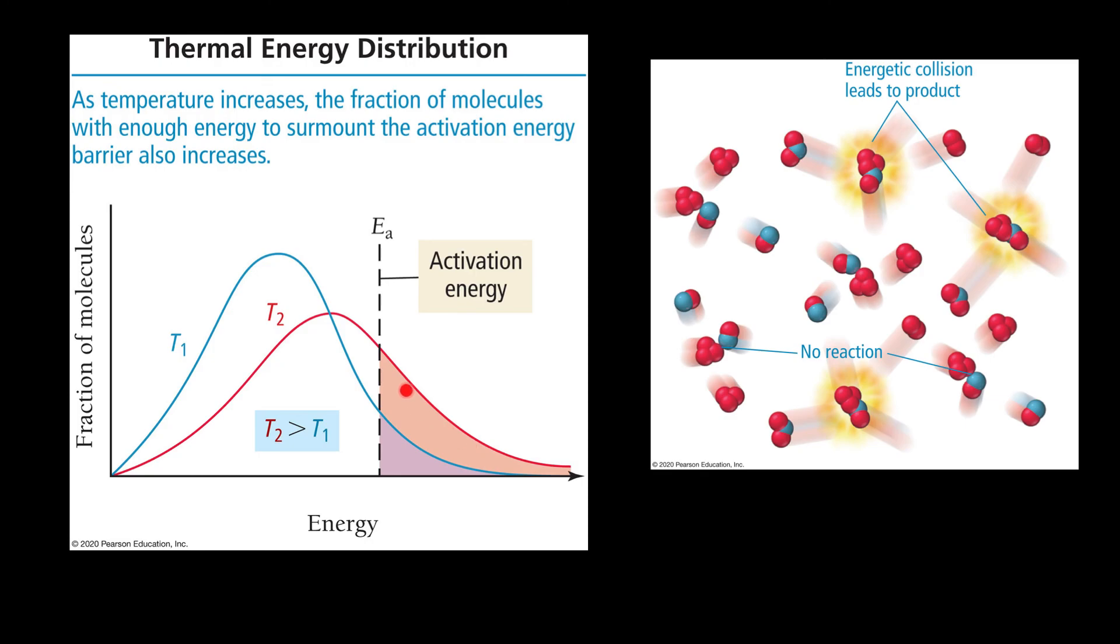And so this tail of this curve here is really telling us the number of molecules that can collide and can react. And of course, not all collisions will lead to a reaction. They have to collide with the minimum energy and also with the correct orientation.